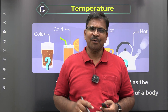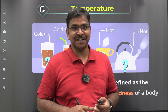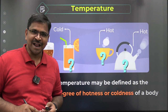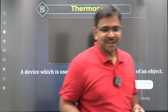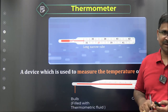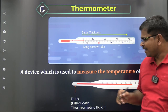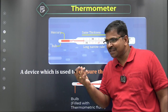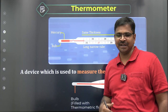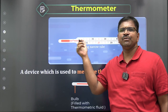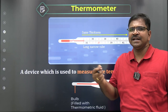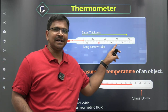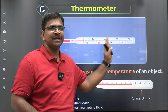We compare the hotness or coldness of an object with the surroundings, and then we feel whether it is cold or hot. To measure that, we need a quantity called temperature, and the instrument used for measurement of temperature is called a thermometer. A thermometer has a sensitive element that senses the temperature — hotness or coldness — and there is a working fluid inside, mostly mercury.